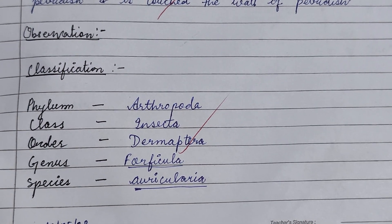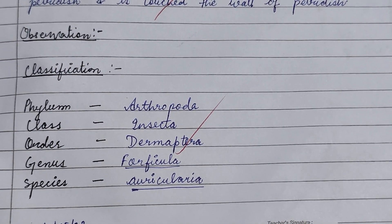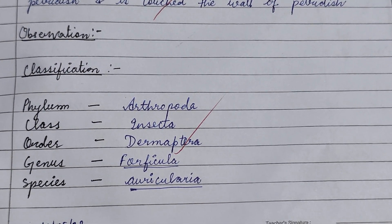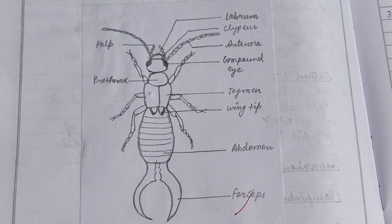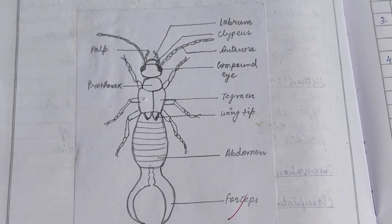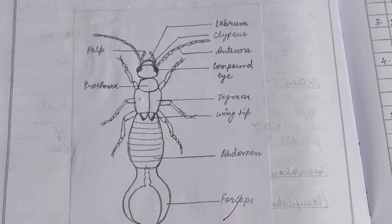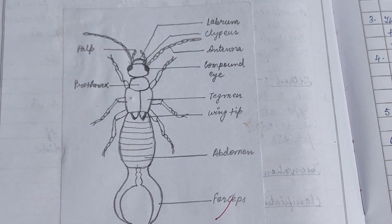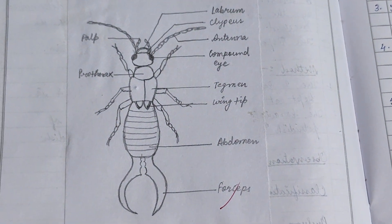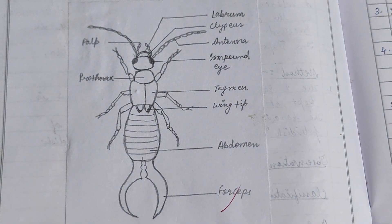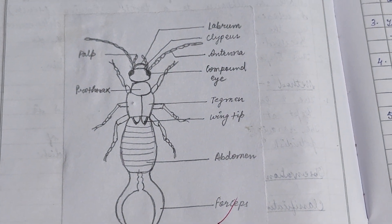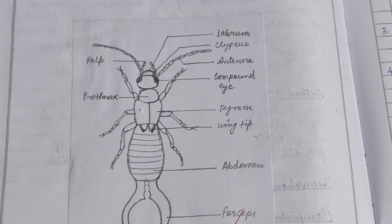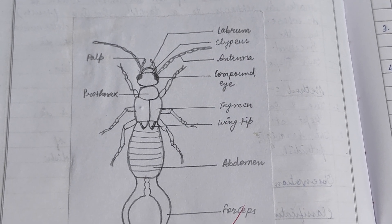The scientific name of the earwig is Forficula auricularia. In the picture of Forficula auricularia, there is a distinct region of the head, thorax, and abdomen. There are forceps for sensation, and there is also an antenna, which is a sensory organ.